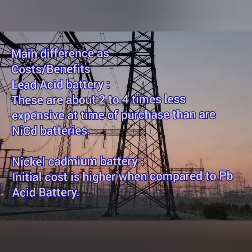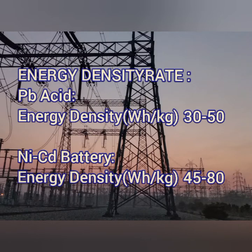Next is energy density — the amount of energy that can be stored in a cell. In lead acid batteries, the energy density is 30 to 50 watt-hours per kilogram, which is not particularly high. In nickel cadmium, the energy density is 45 to 80 watt-hours per kilogram, which is better than lead acid.